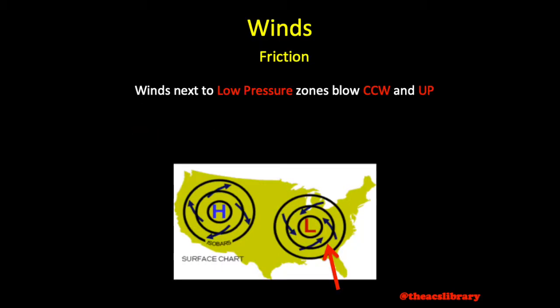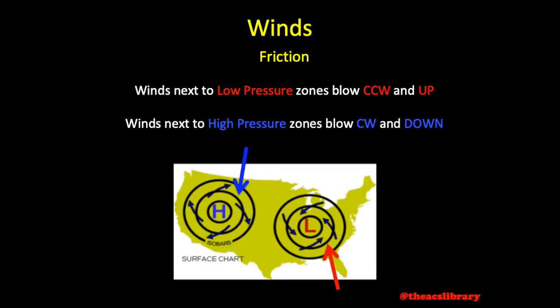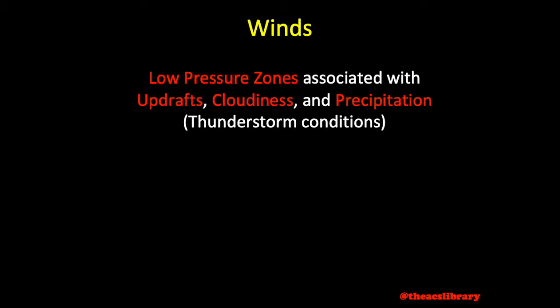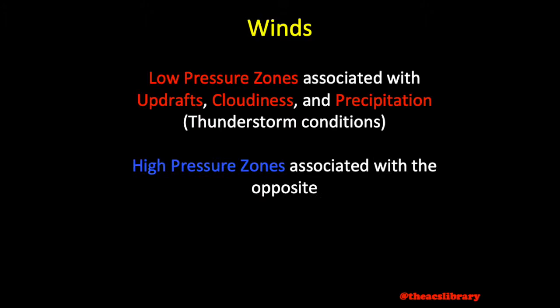Winds directly adjacent to low pressure zones blow counterclockwise and up, while they blow clockwise and down around a high. Because of this, rising air around a low pressure zone is typically associated with updrafts, cloudiness, and precipitation, and falling air is associated with an opposite effect.